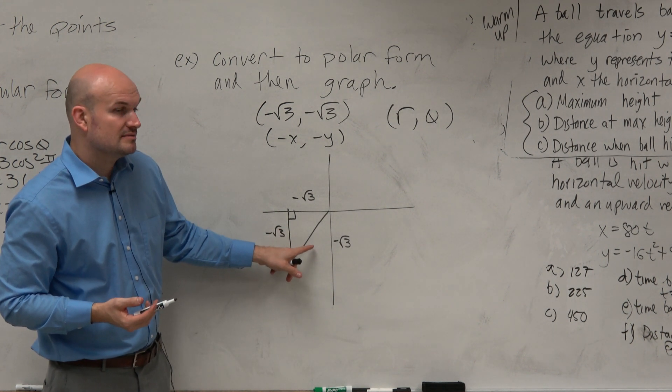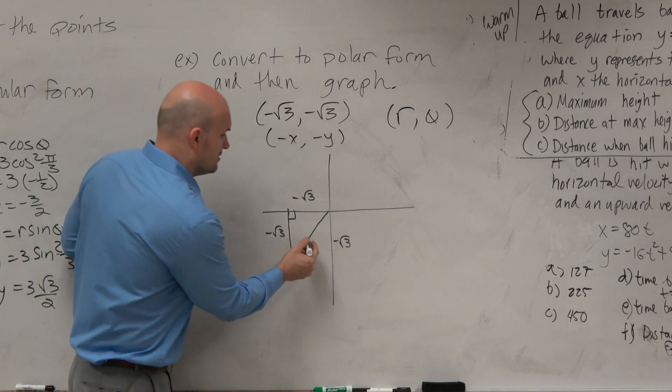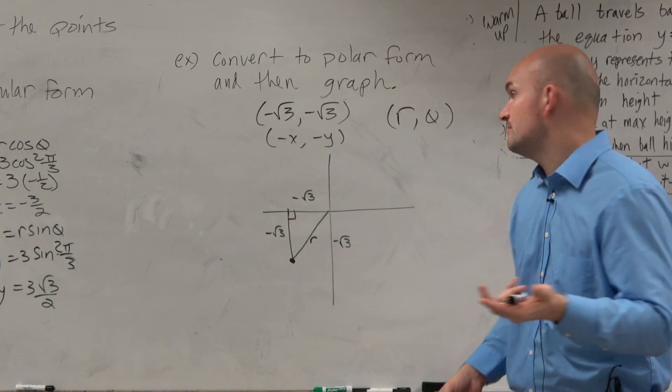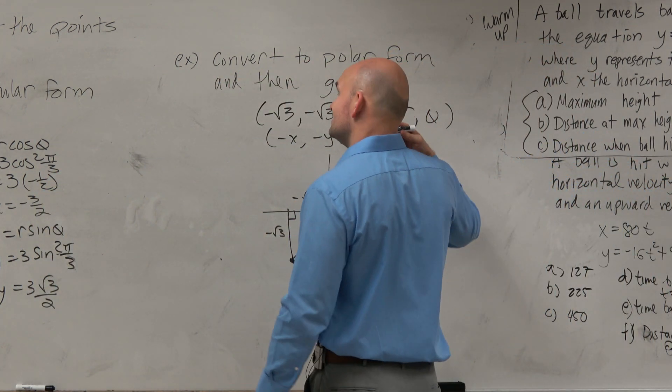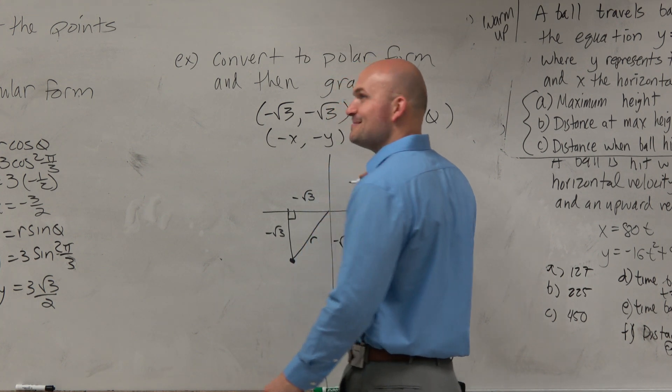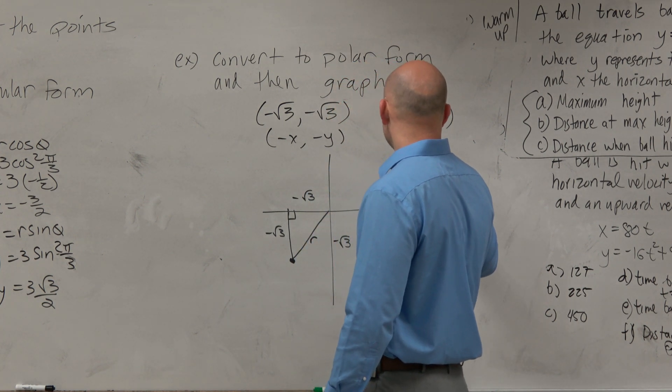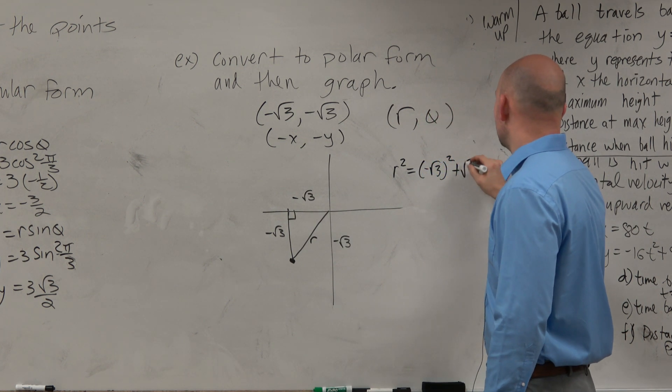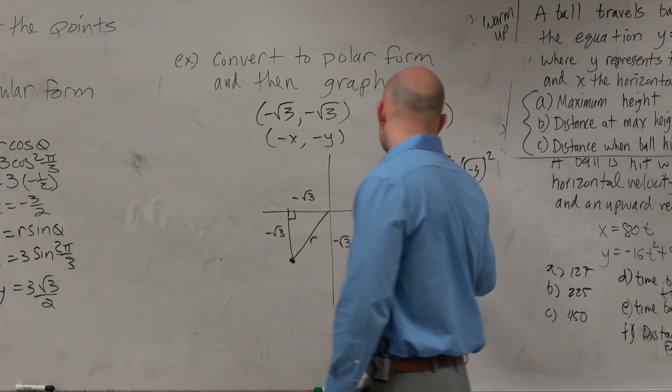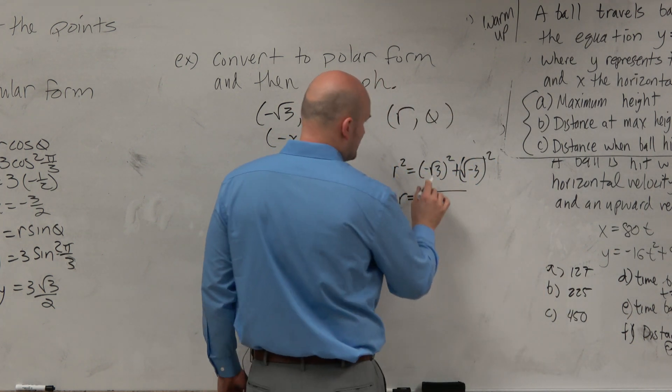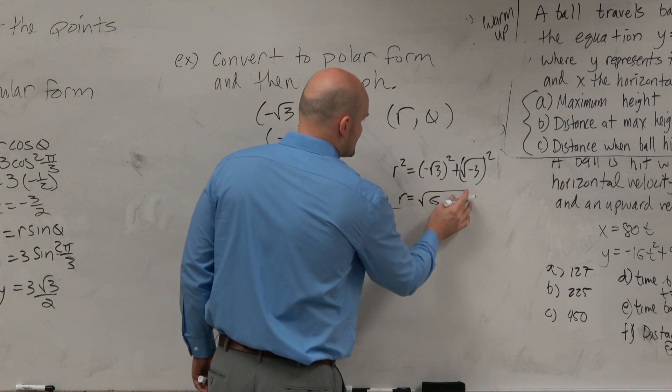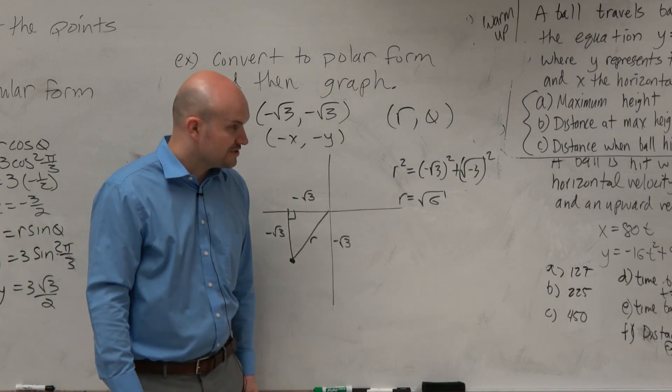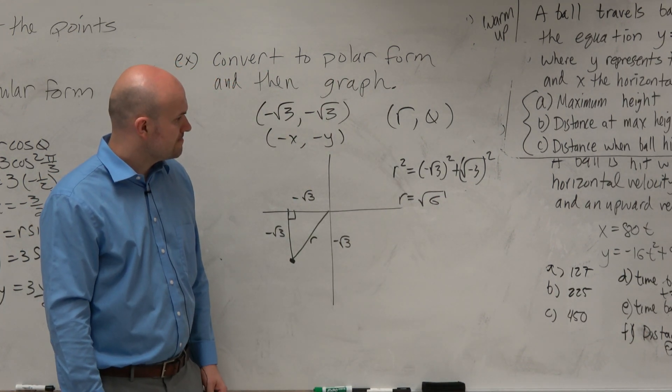Can I figure out the radius? Right? The r is basically just going to be my hypotenuse. So r squared is equal to negative square root of 3 squared plus negative square root of 3 squared. So r is equal to, let's see, 3 plus 3 is 6. Just doing my math a little bit faster from there.